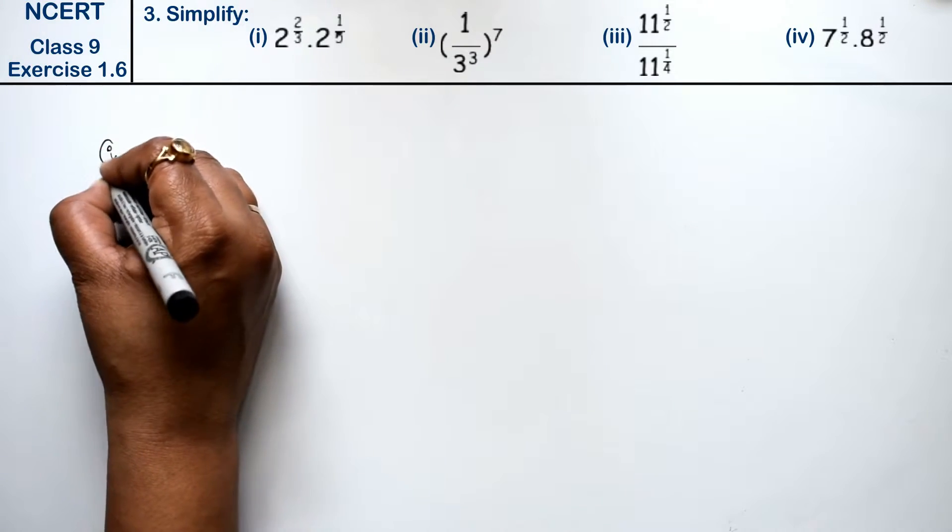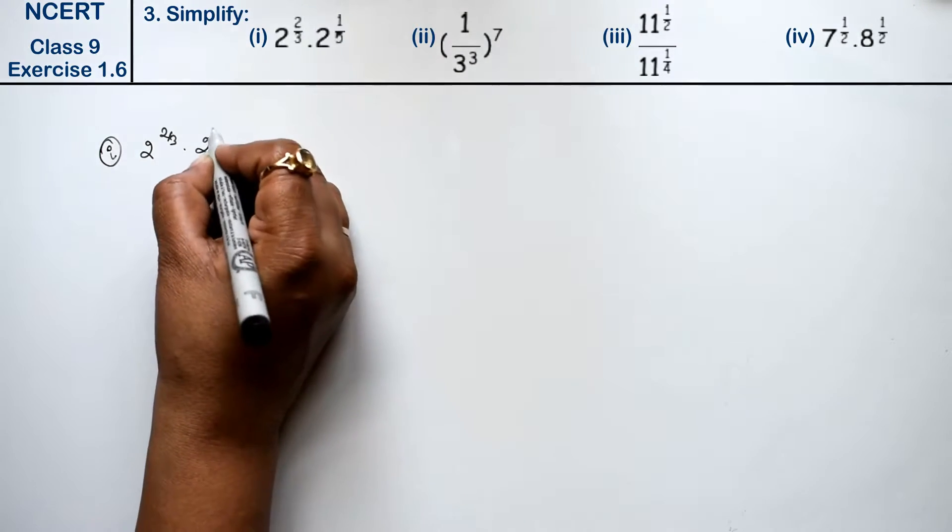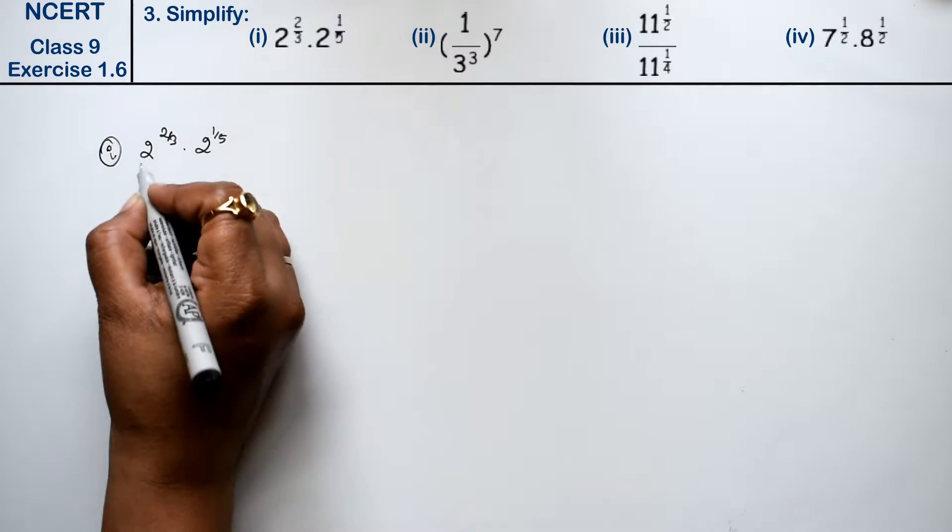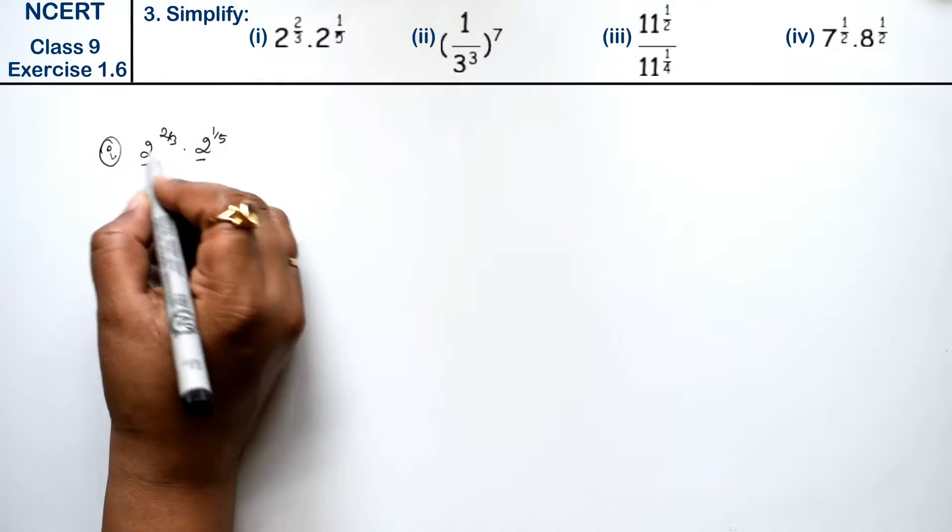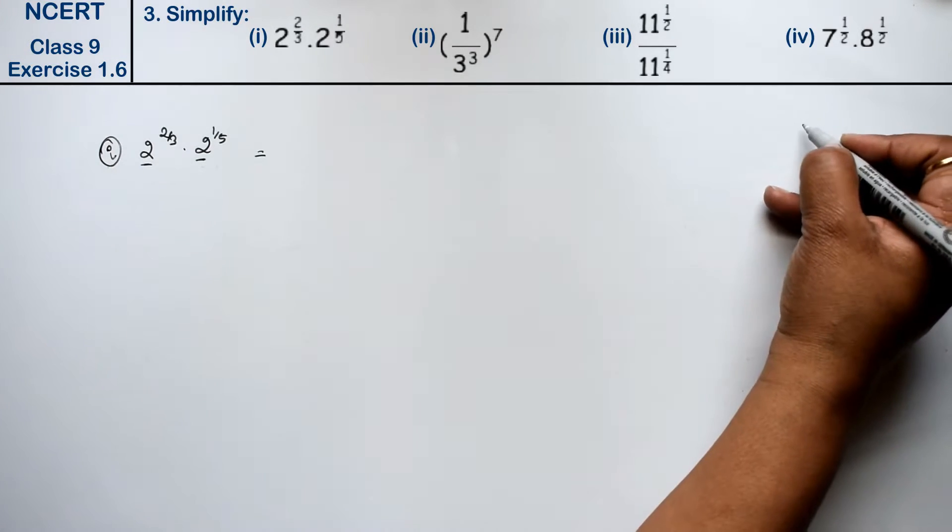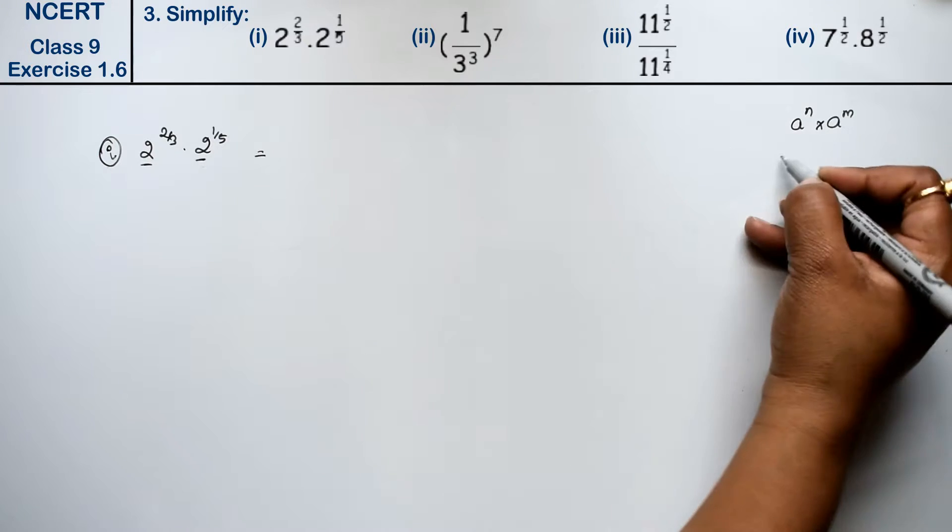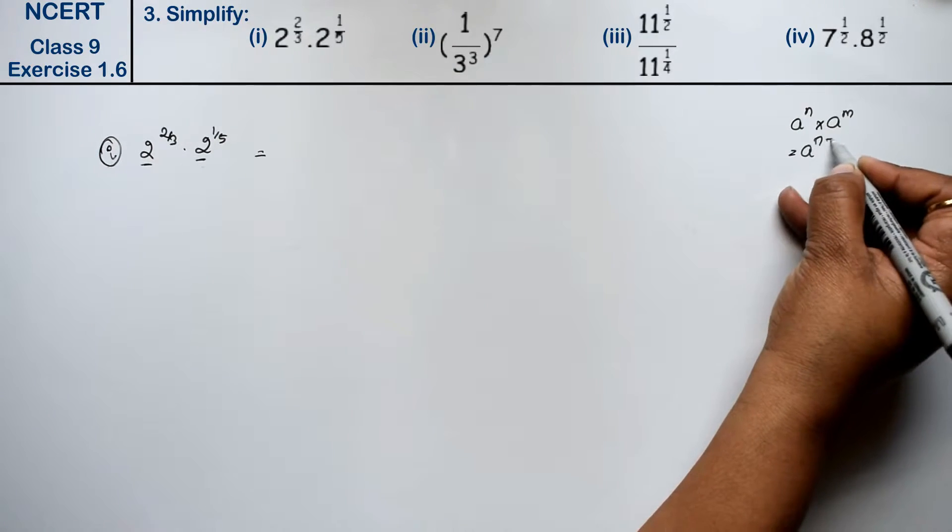First part is 2 to the power 2 upon 3 into 2 to the power 1 upon 5. Friends, base same are both 2. Power is different. What do we do in multiply? A to the power n into A to the power m. What do we write? A to the power n plus m.